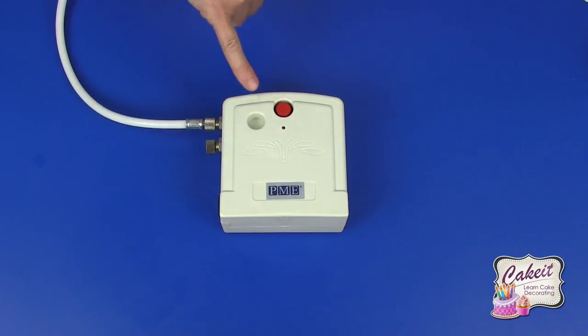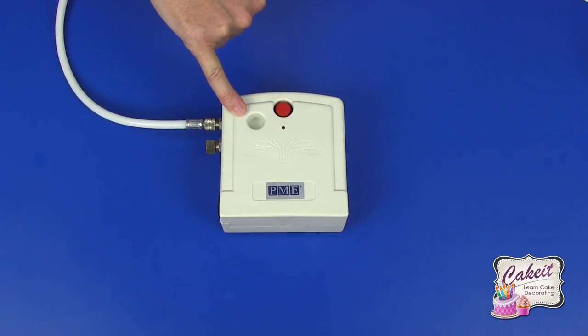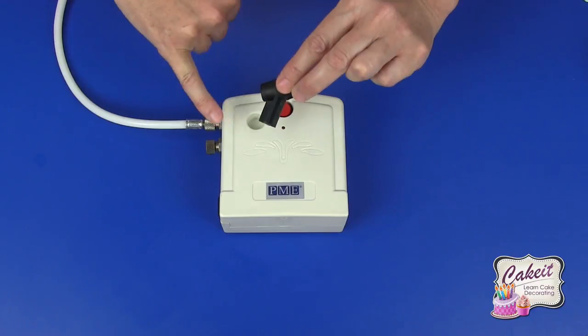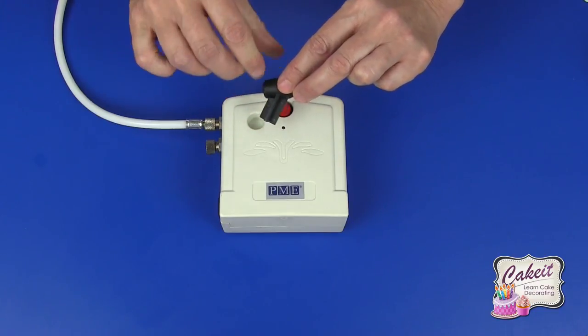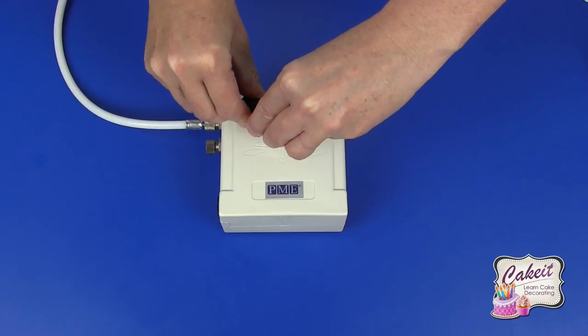And next we're going to into the recess add in the holder for the airbrush. Onto here I've just put a little bit of release agent to make sure that this pushes into the recess easily.